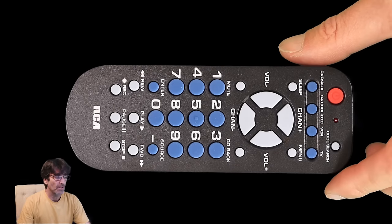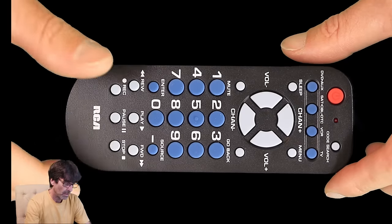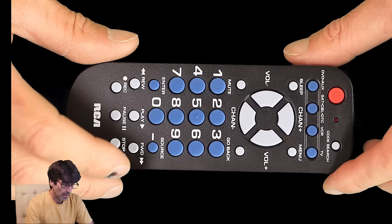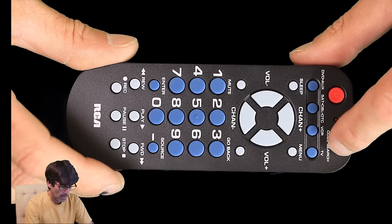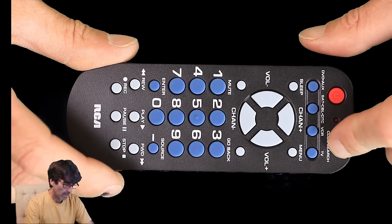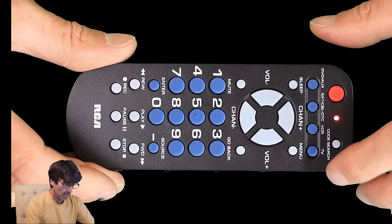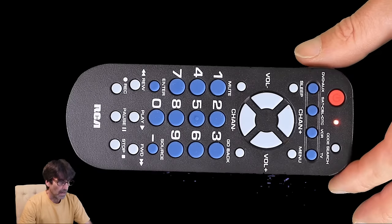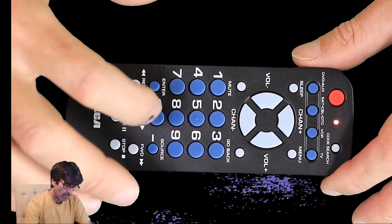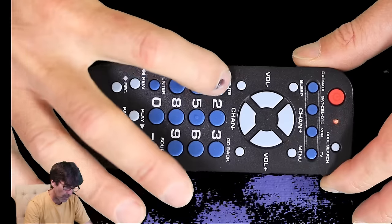We're going to start with the direct entry method first. So basically, all you do, we're going to program a TV first. So push the code search button here until this LED comes on like that. Push the component, which in this case is going to be a TV. And I'm working with a Sony TV, so it's 0810.